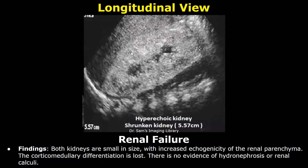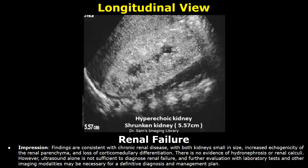Here is a case of renal failure. On ultrasound, the findings can be small size of both kidneys with increased echogenicity of the renal parenchyma. The corticomedullary differentiation is lost. In the impression, the findings are consistent with chronic renal failure, with both kidneys small in size, increased echogenicity of the renal parenchyma, and loss of corticomedullary differentiation. Ultrasound alone is not sufficient to diagnose renal failure, so further evaluation is needed. You must mention this in the report.